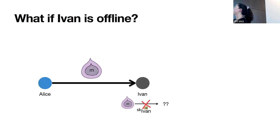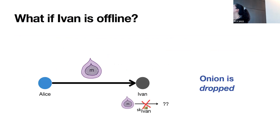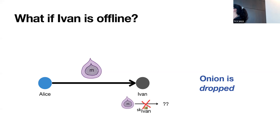Revisiting the problem where Ivan is offline: we say the onion is dropped when it can't continue past Ivan. Remembering that we need a polylogarithmic number of rounds for anonymity — if a constant fraction of servers are offline, Alice's onion will be dropped with overwhelming probability. So we can't just have Alice send her message multiple times, since the probability of dropping is too high. We need something more clever.